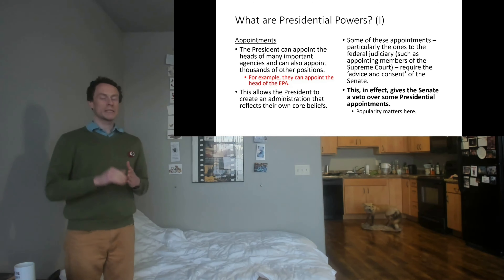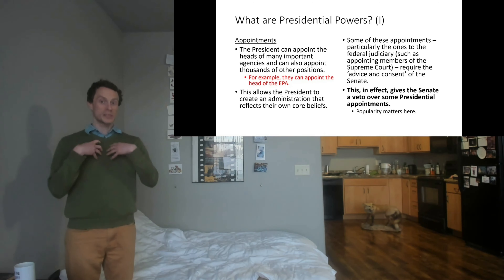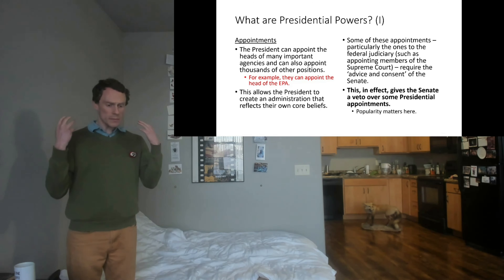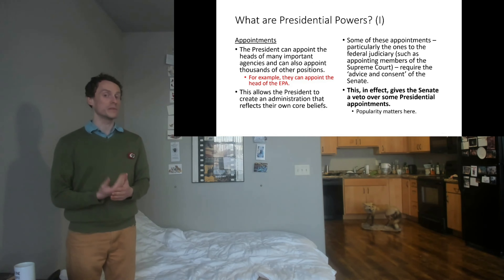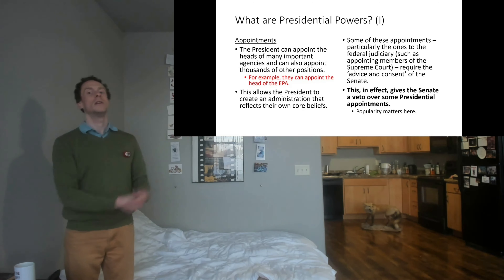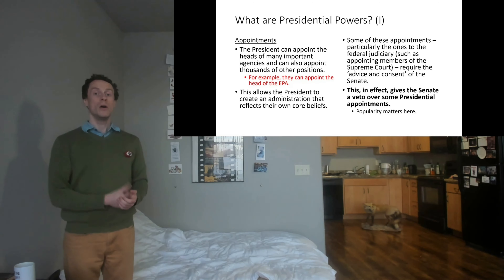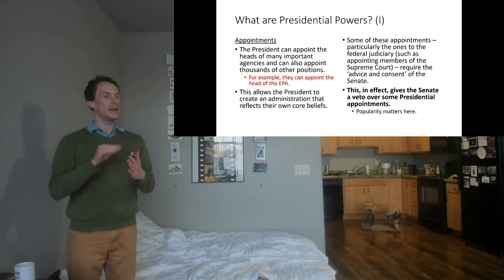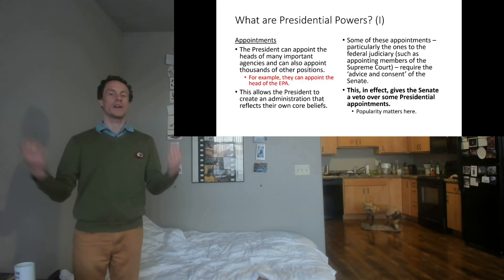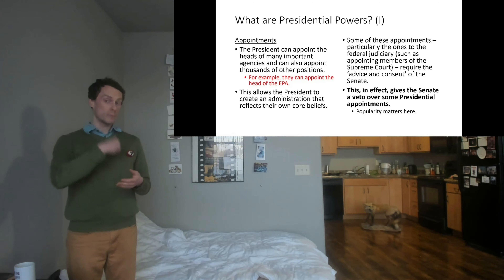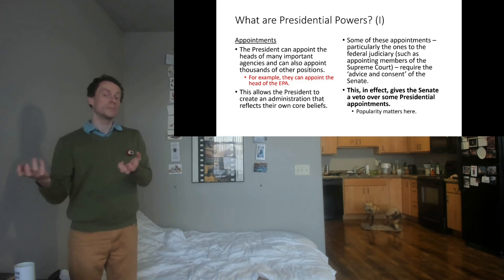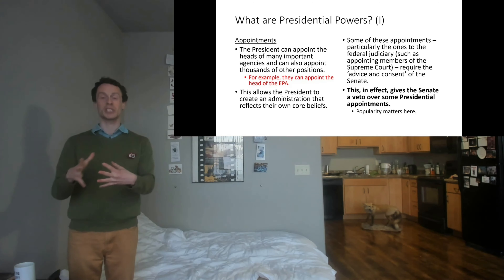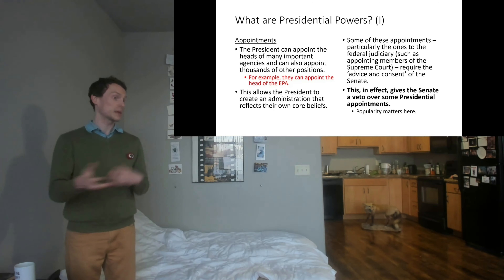Getting the right person in office can shift the direction of a whole agency, including the Environmental Protection Agency. It's not quite as powerful as a whole-scale systemic institutional change, but one of the things you can advocate for in your policy brief is to change the person in charge of a given area. For example, if you're in favor of Medicare for All, it will matter a lot who is in charge of implementing that.